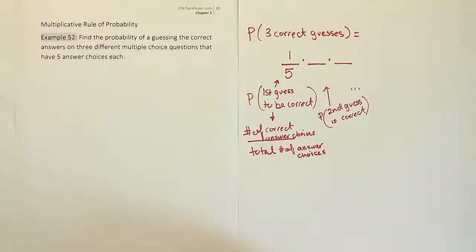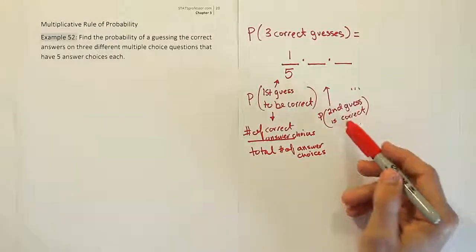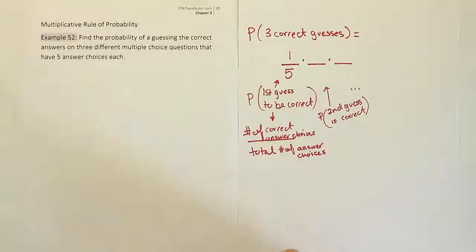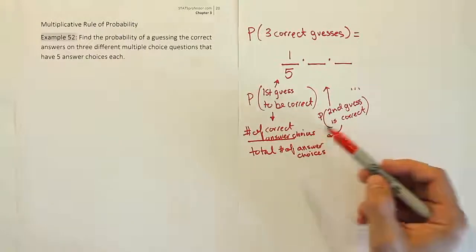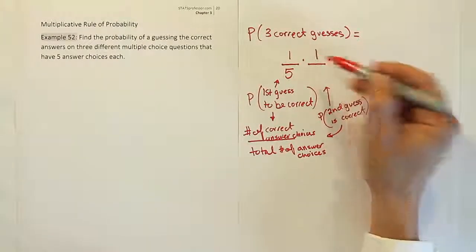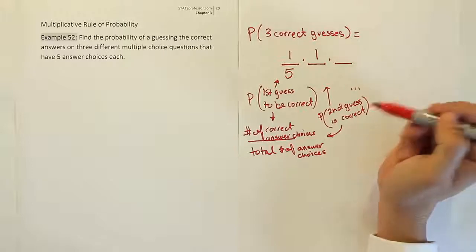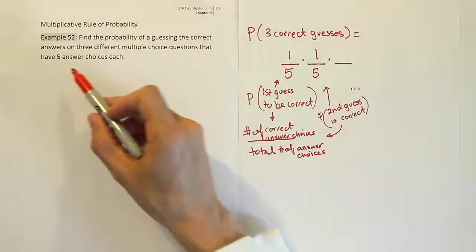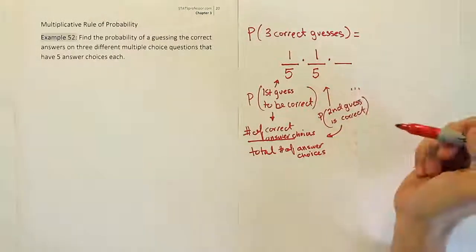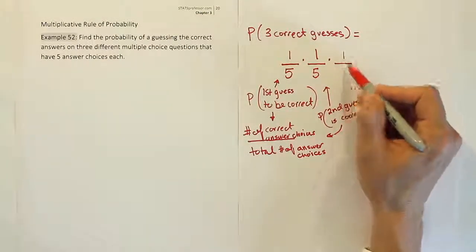So at that point, it's still the same probability because we're going to ask the same question. We'll say, number of correct answer choices for the second question. Well, again, there'll only be one correct answer choice typically. How many total answer choices? Typically five, according to the problem, it says there are five answer choices for each question. And then so on and so forth for the next one.